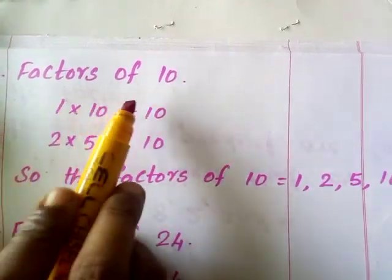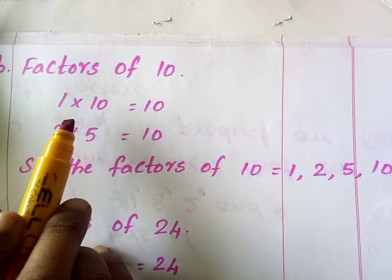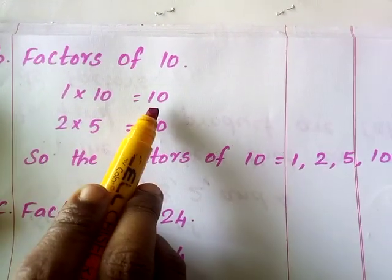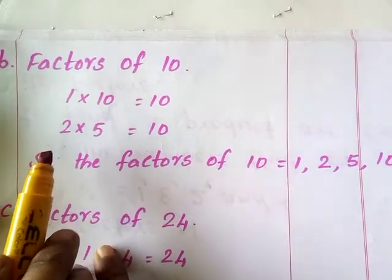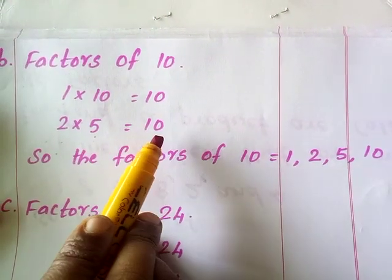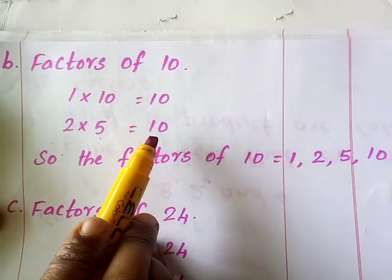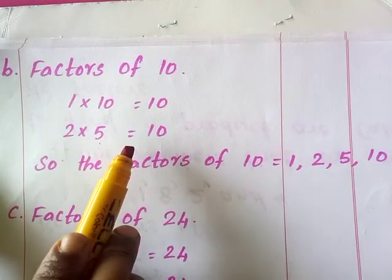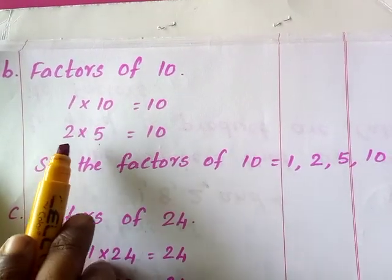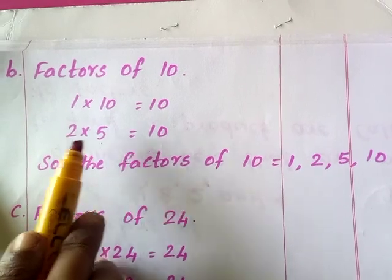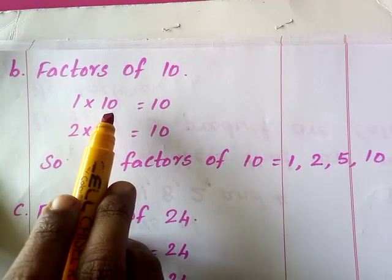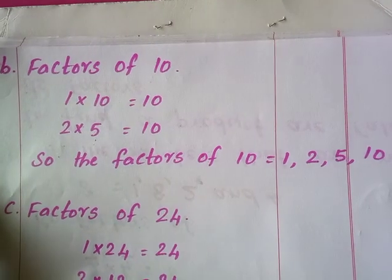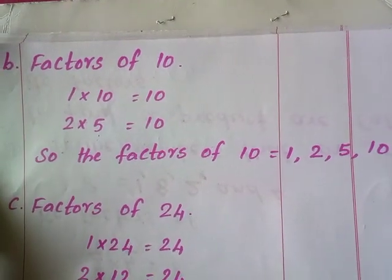Now factors of 10. As I said, start from the first table. So we get 1 into 10 is 10. Then in the 2's table we have 2 into 5 is equal to 10. Third table we don't have. Then 4, 5 — the fifth table also we have, that is 5 into 2. That is already written. As well as the 10th table also — 10 into 1 — that also I have written here. In such cases you can write one statement, that is enough.